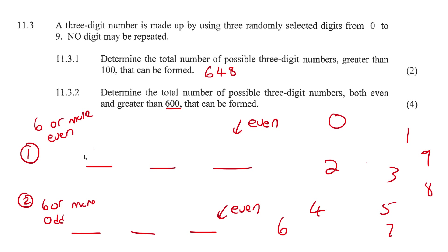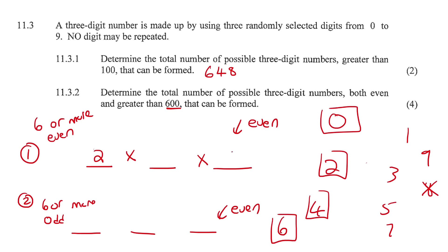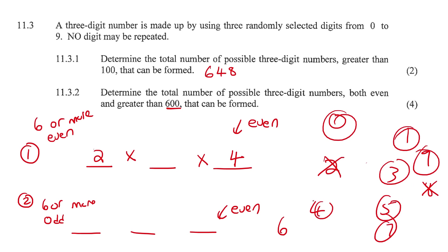For scenario one: how many options for the first position? It must be six or more and even, so that could be six or eight - two possibilities. Always do restrictions first. If the first digit is already even, say we chose eight, how many even numbers remain for the last digit? That gives us four even numbers available. Then for the middle position, how many numbers are available? That gives us eight. So scenario one: 2 × 4 × 8 = 64.